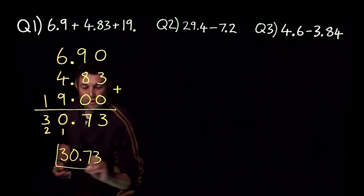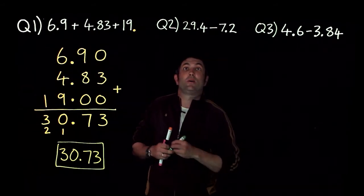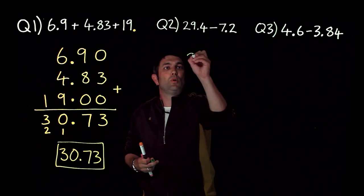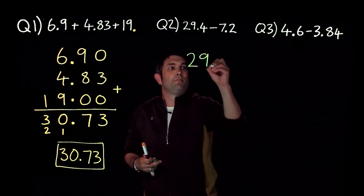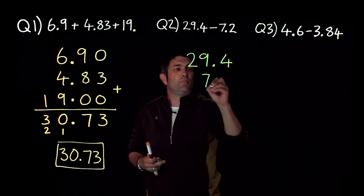Now then, moving on to the next one I've got a takeaway here. So again because of place value I'm gonna have the decimal points all in a column. So we've got 29.4 take away 7.2.